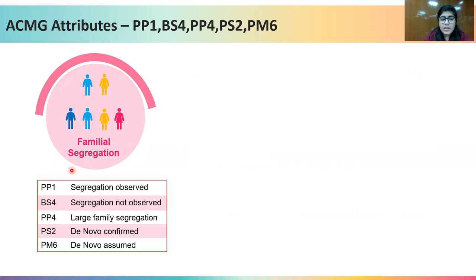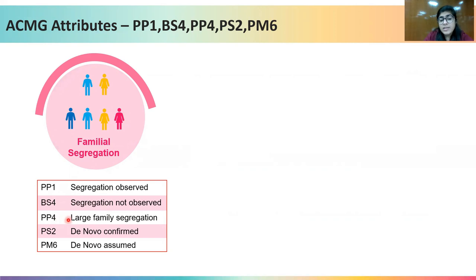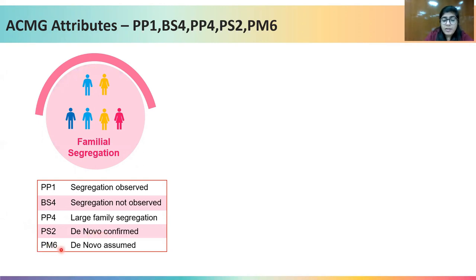In the case of familial segregation, PP1 is given when the variant is segregating with the phenotype in a family. BS4 is given when the variant is not segregating with the phenotype in the family. PP4 is given when there is large family segregation, with four major criteria on which you can assign PP4. PS2 is given when maternity and paternity of the proband are confirmed, and PM6 is given when parental identities are assumed. The variations involved in both PS2 and PM6 are de novo, not germline.